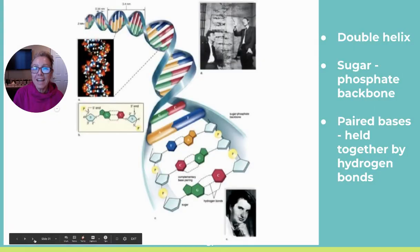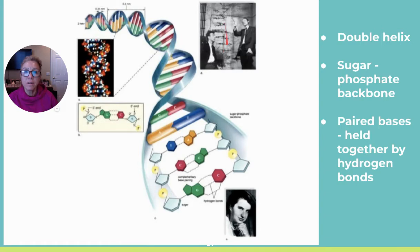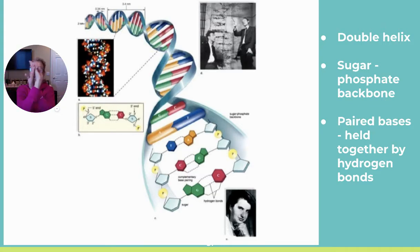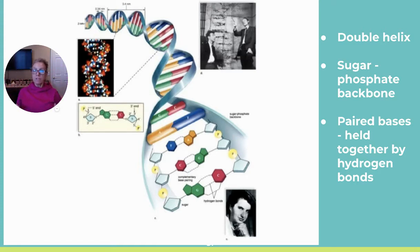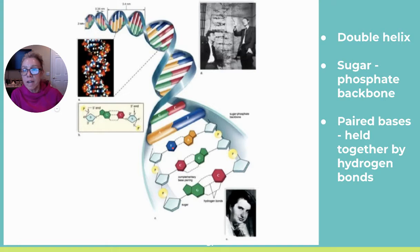Watson and Crick used that information — you can see Rosalind Franklin acknowledged in their work — and came up with the double helix structure. There is a sugar-phosphate backbone with paired bases held together by hydrogen bonds. Between adenine and thymine there are two hydrogen bonds; between guanine and cytosine there are three hydrogen bonds. The constant diameter is maintained because a purine always pairs with a pyrimidine — a double ring with a single ring.